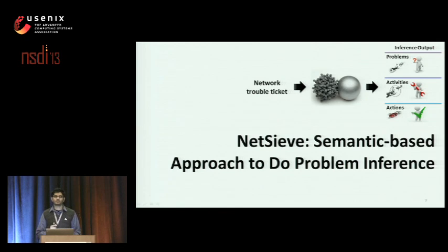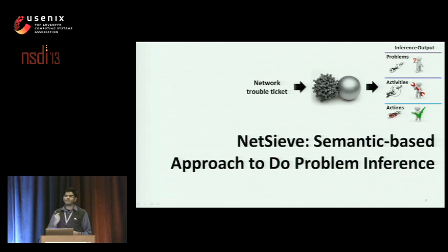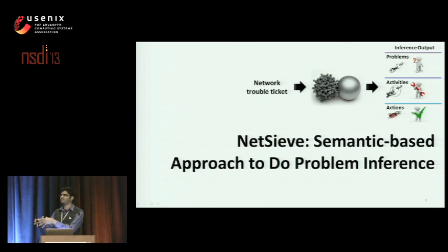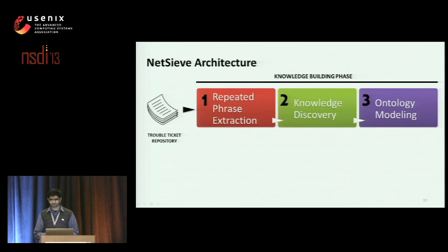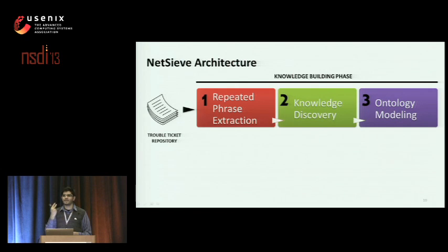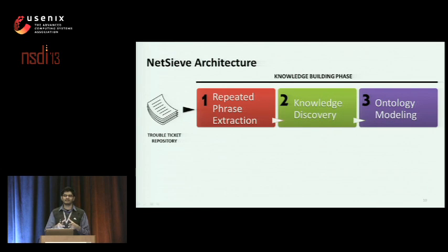NetSieve takes a semantic-based approach towards this problem to infer problems, activities, and actions. The system operates in two phases. First, we want to build a knowledge base that contains phrases that are important in the current networking domain. And then use this knowledge base to extract the three key features from a given ticket. Think of the knowledge base really as a technical dictionary. Given a ticket, you would look up each word and each phrase inside the technical dictionary to understand its semantic meaning, and then use it to extract problems, activities, and actions.